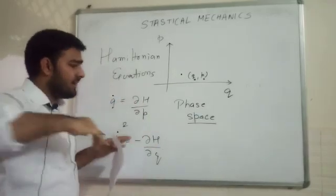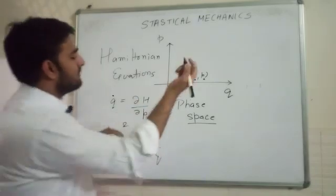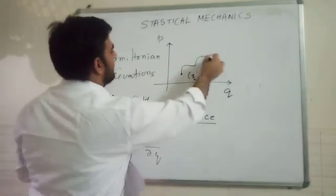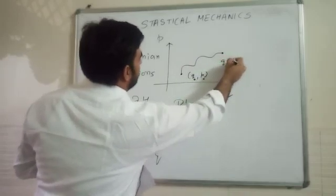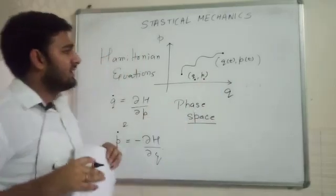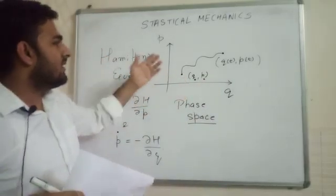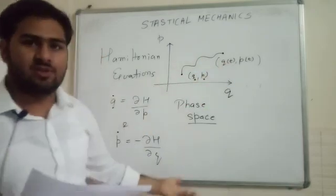It tells that Q dot equals dH/dP and P dot is minus dH/dQ. So, given the Hamiltonian of the system, we can predict what will be the future trajectory of this particle at any instant. This is Q(t) and P(t). In principle, if we are given the initial condition where the particle is, then we can predict what will be its future trajectory.